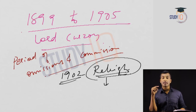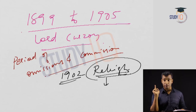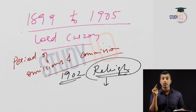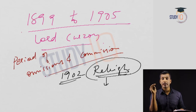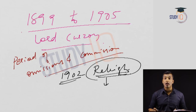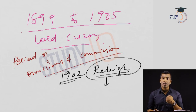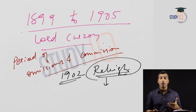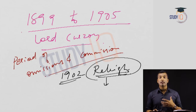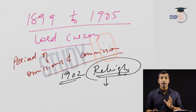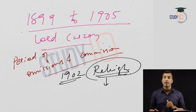Just as Warren Hastings' period is known as the 'trial and error period,' similarly, Lord Curzon's period is known as the 'period of omissions and commissions' — a question that can appear as a main exam question. Be very attentive as this can be important for both mains and prelims.